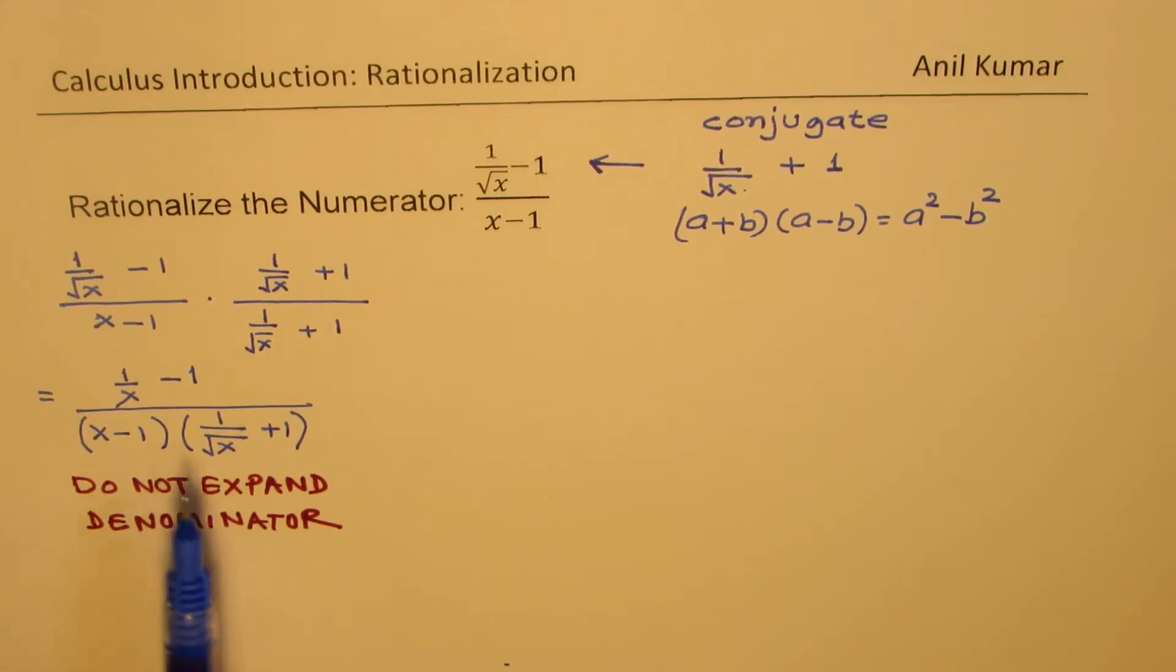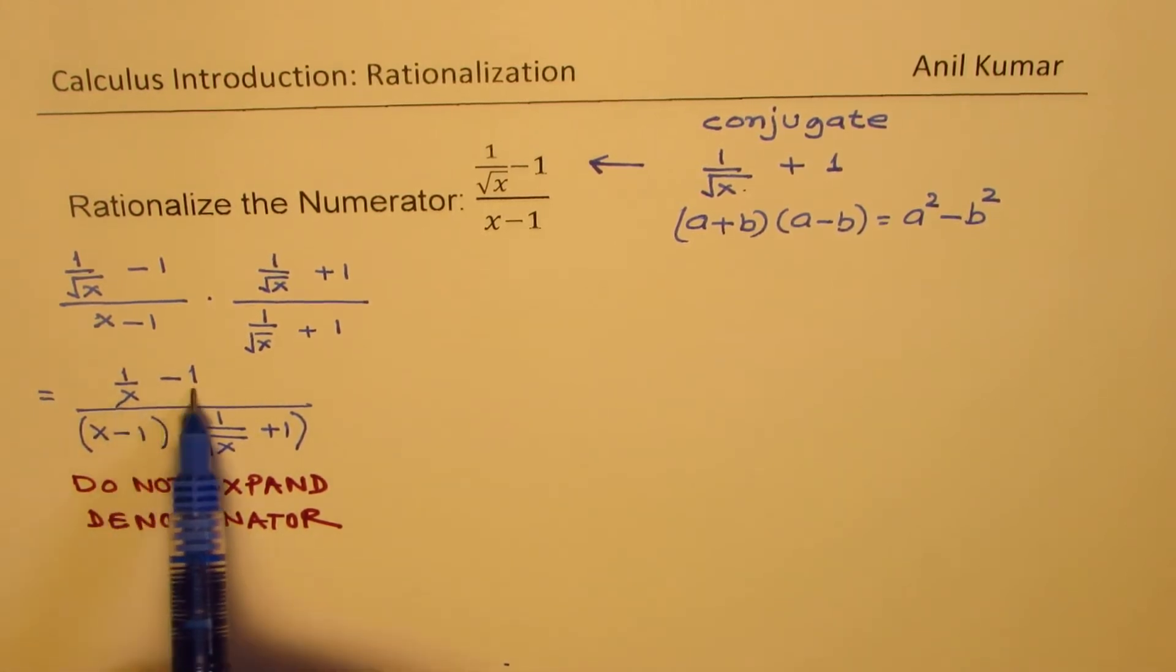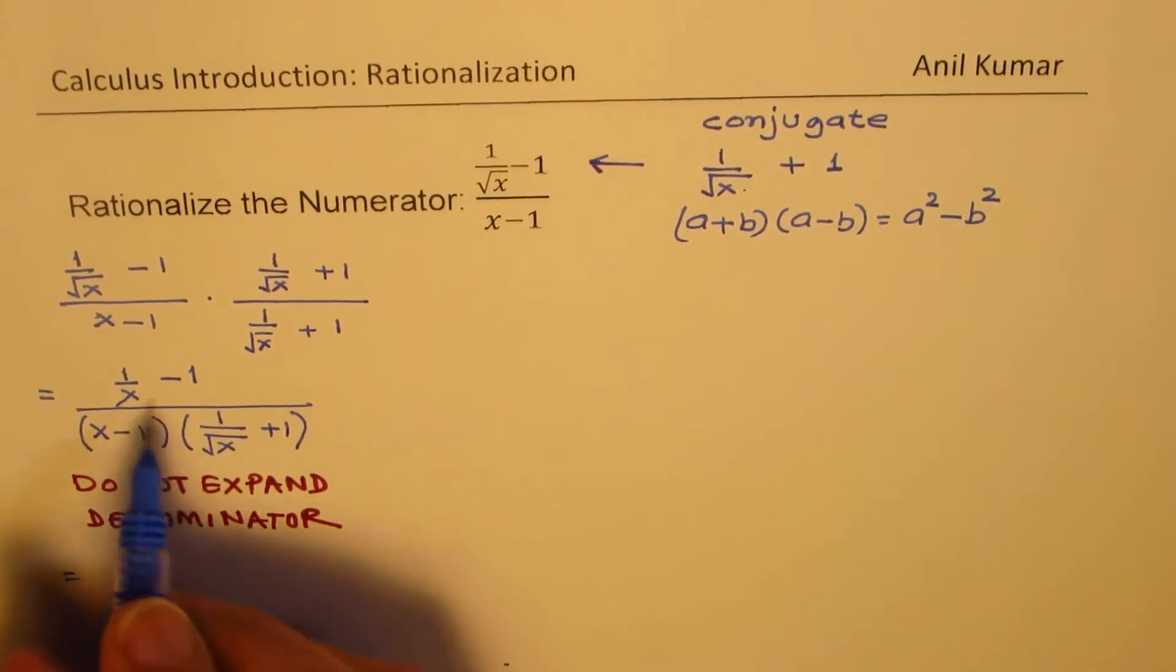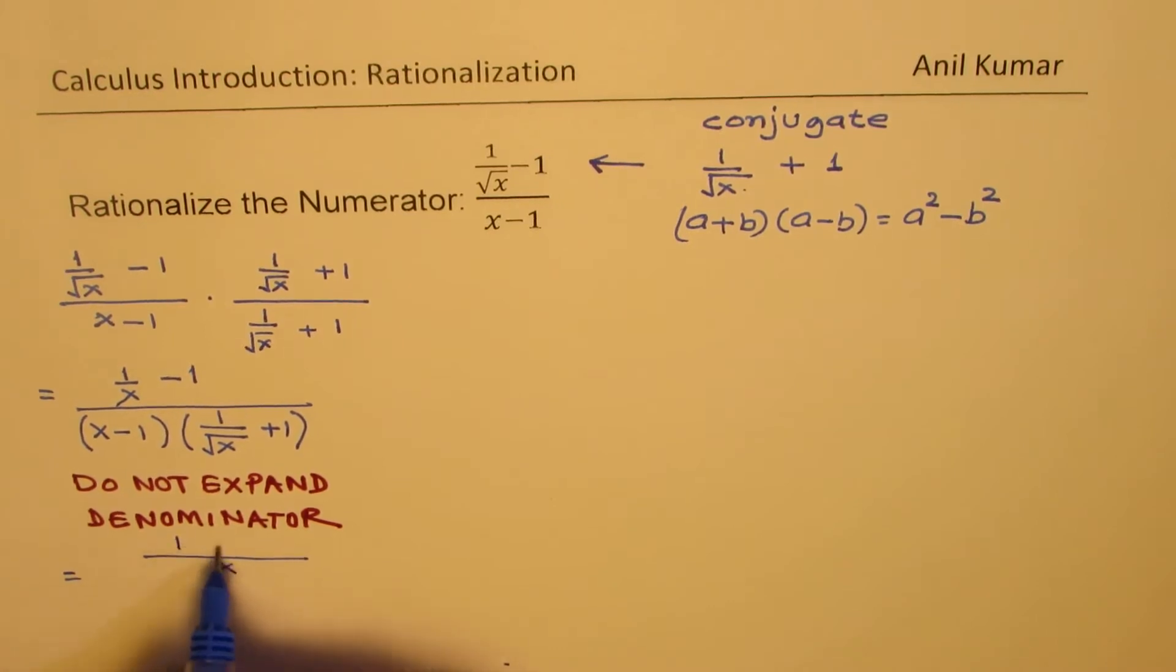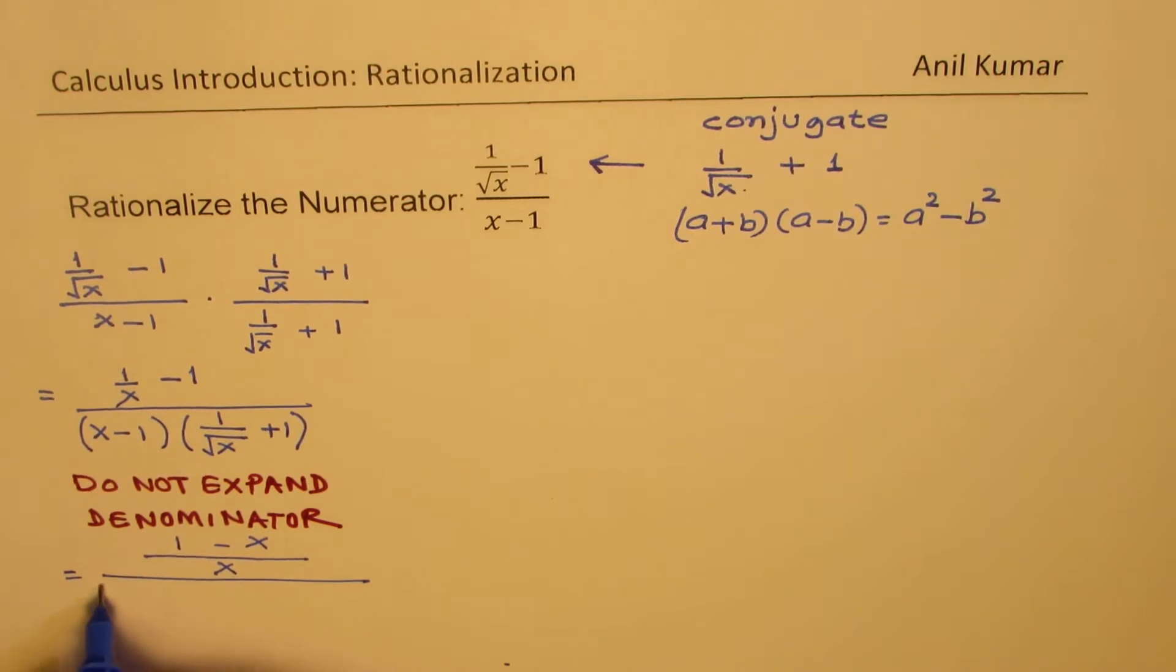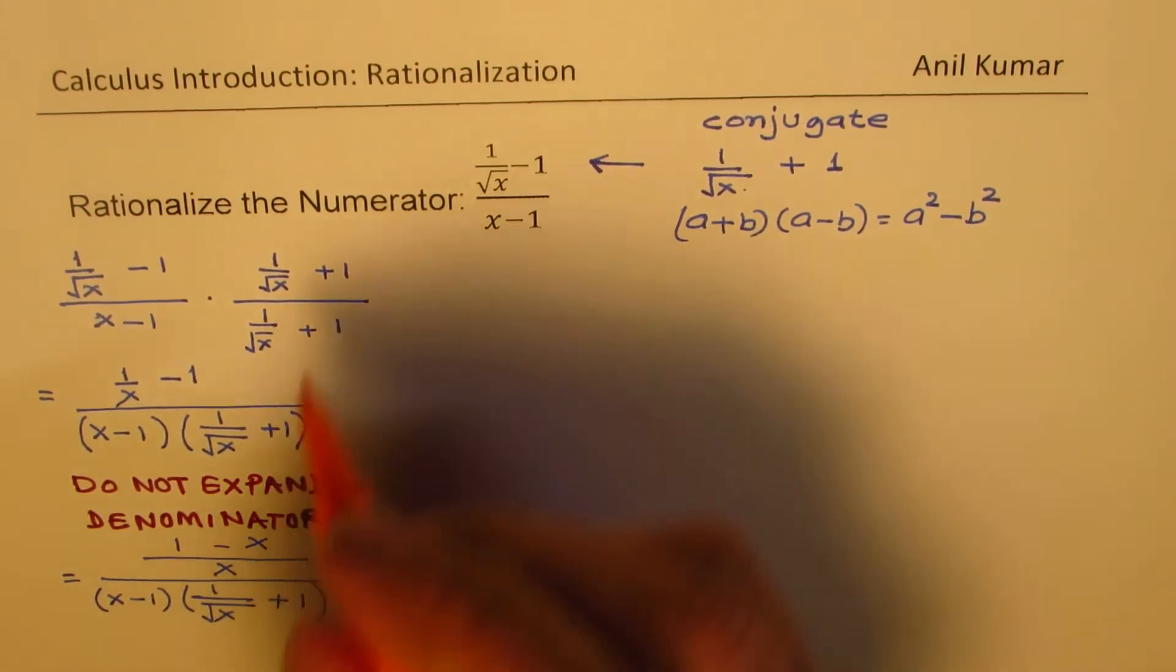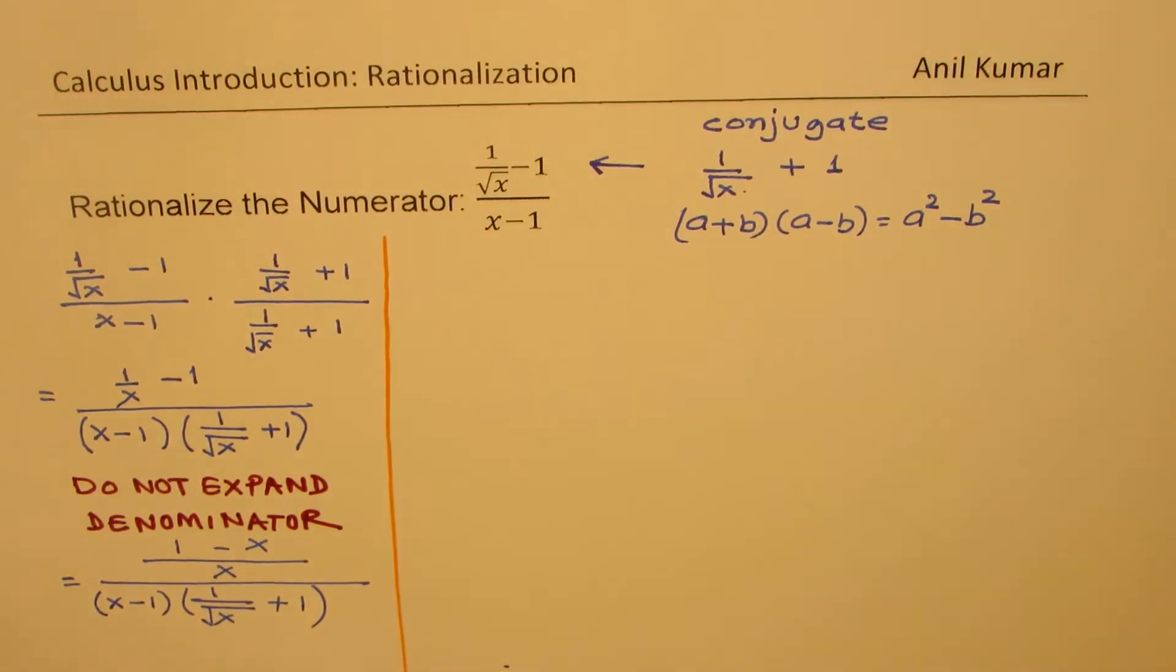We have done the rationalization. The second part here is to simplify this particular expression. How do we do that? We'll take a common denominator and then work our way through. From here we can write the numerator as common denominator being x, 1 minus x. And the denominator which we have here is these two terms which should not be multiplied. That is the major thing to learn in this part of the video.